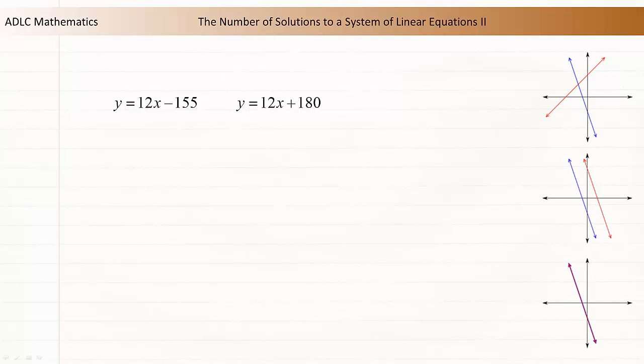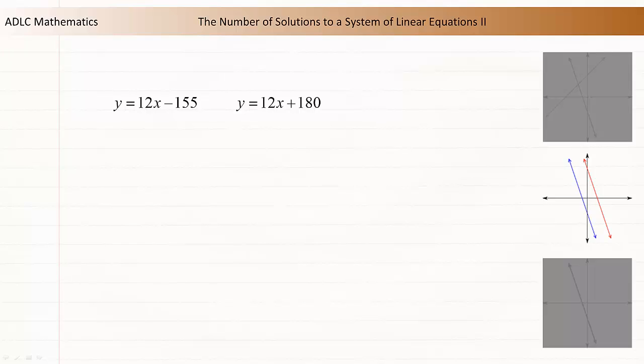In lesson 8.1, we saw that this system had no solution because the two lines were parallel and the y-intercepts were different. Let's try solving this algebraically. The two equations are in the same format, so elimination is a good choice.